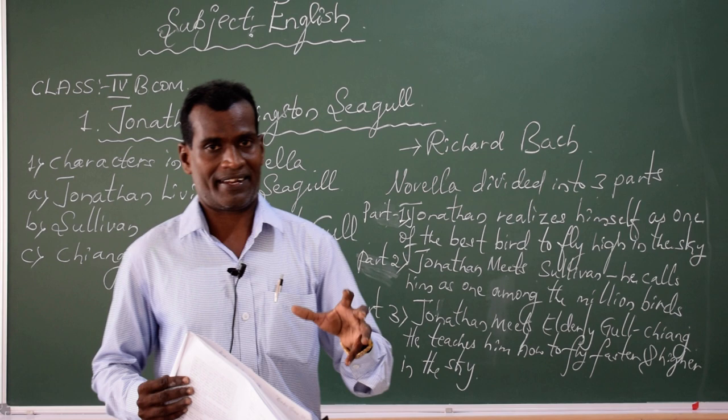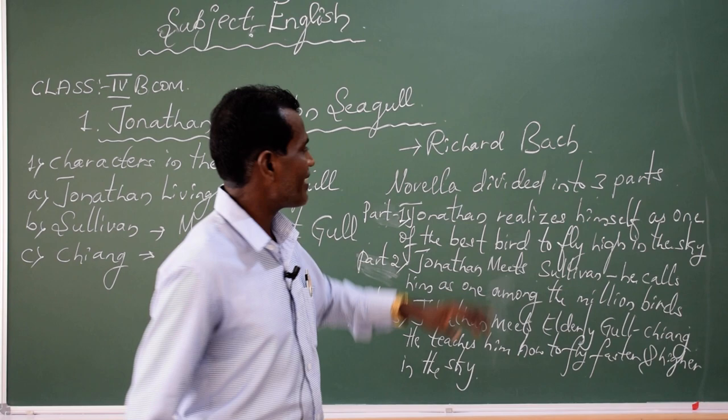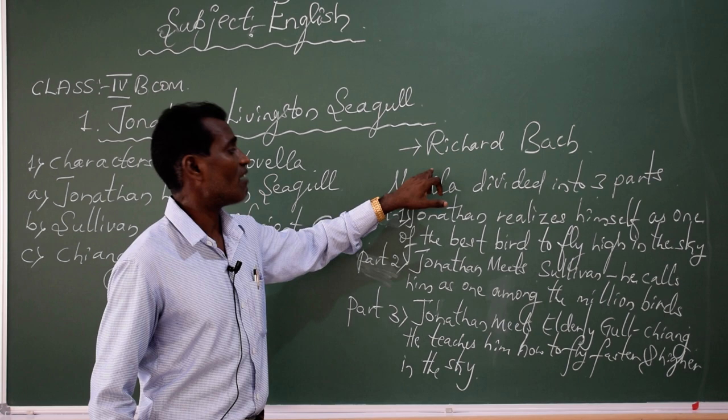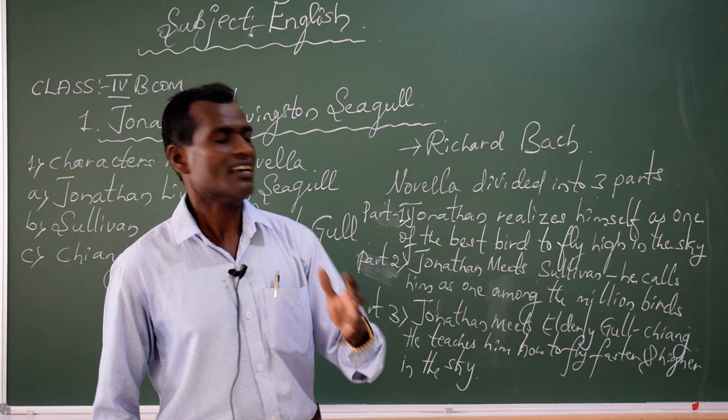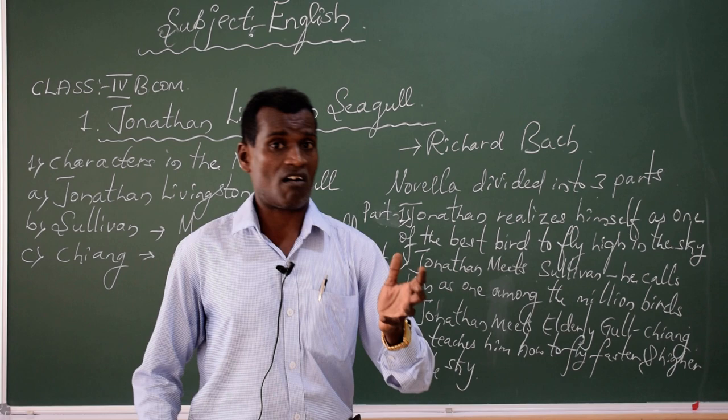By this, we can understand how Richard Bach — who was born and brought up in America — had a dream that he wanted to fly like a bird in the sky, because he wanted to enjoy life like a bird. Everyone has a dream. In this novella, Richard Bach speaks about how Jonathan Livingstone Seagull is going to achieve how to fly faster and higher in the sky, and how it is going to motivate the rest of the bird community to work hard and achieve goals and objectives in one's life.